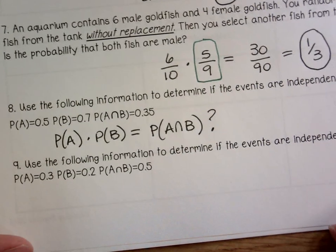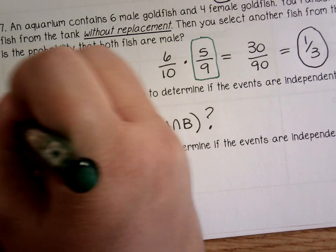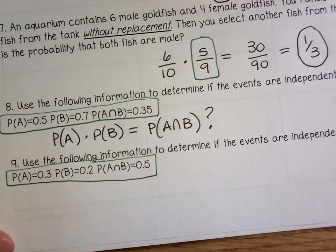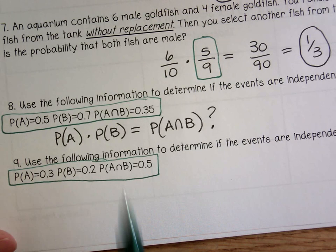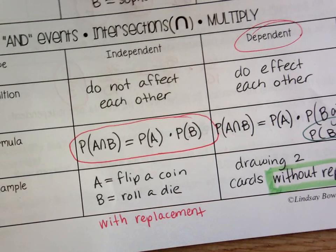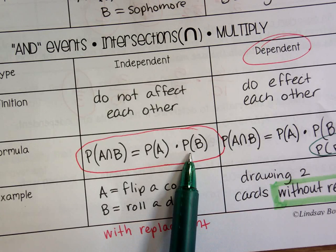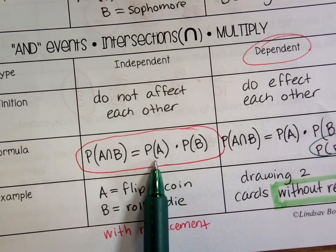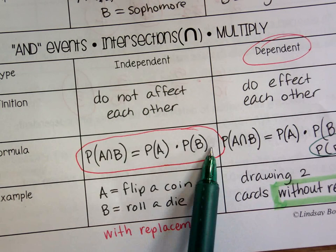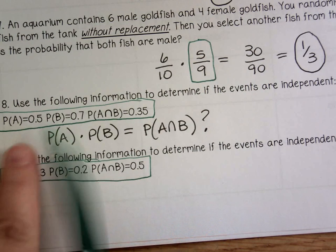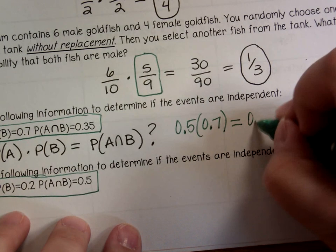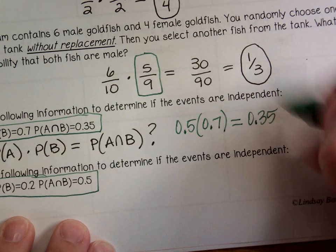Numbers 8 and 9 — this is where we stopped. When they just give you the probabilities, you can't make decisions about whether events are independent or dependent based on what you know about the items. So what you have to do is test it. If the probability of A times the probability of B gives me the probability of A and B, then yes, it's independent. So: 0.5 times 0.7 — is that 0.35? Which is what it needs to be? Yes. So that's a yes.